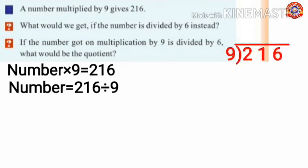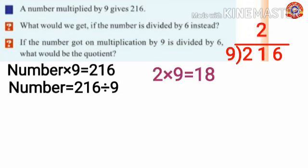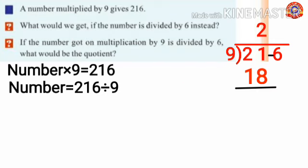So number equals 216 divided by 9. Take the first digit 2; 2 is less than 9, so take the next digit also — we get 21. How many times does 9 go into 21? There is no 21 in the multiplication table of 9, so we take 18. 2 times 9 is 18. 21 minus 18 equals 3. Bring down 6 to get 36.